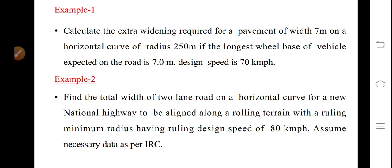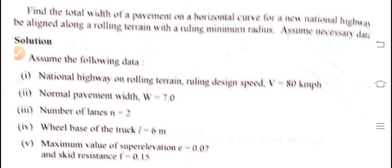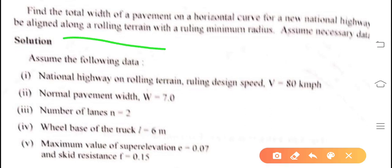Example: Calculate the extra widening required for a pavement of width 7 meters on a horizontal curve of radius 250 meters, if the longest wheel base of vehicle expected on the road is 7 meters and design speed is 70 km/h. Another problem: Find the total width of pavement on a horizontal curve for a new national highway aligned along rolling terrain with ruling minimum radius — assume necessary data.